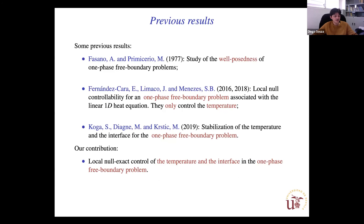Some previous works: Fasano-Primicerio and Fernandez-Cara and Limaco-Guerrero-Silvano-Meneses proved the first controllability result for the one-phase Stefan problem, but they only controlled the temperature. Our contribution is that we control both the temperature and the interface. There is also a stabilization result by Koga, Diagne, and Krstic for both temperature and interface.